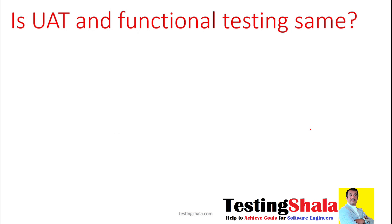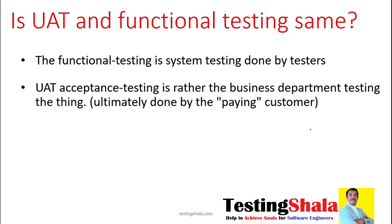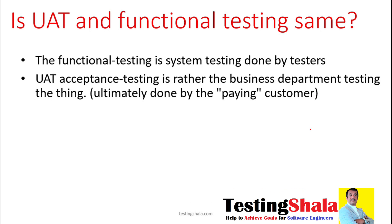Is UAT and functional testing the same? Functional testing is normally concentrated on the functional perspective, which is more of a system testing done by a software tester internally as part of the software development process. But user acceptance testing is done by the business group or business department itself.